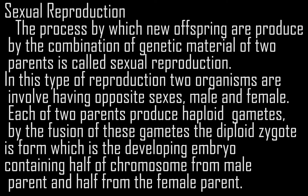Sexual reproduction: the process by which new offspring are produced by the combination of genetic material of two parents. In this type of reproduction, two organisms are involved having opposite sexes, male and female. Each of the two parents produces haploid gametes. By the fusion of these gametes, the diploid zygote is formed, which is the developing embryo containing half of the chromosomes from the male parent and half from the female parent.